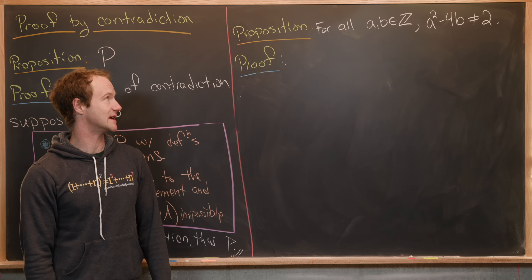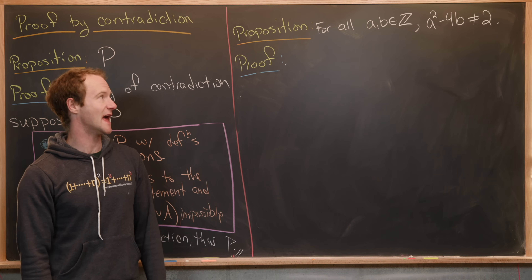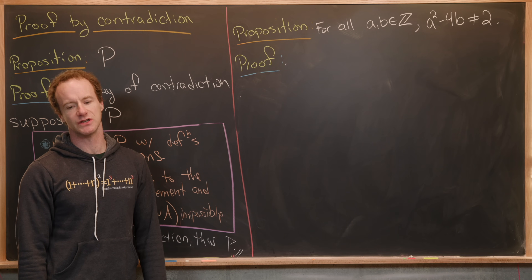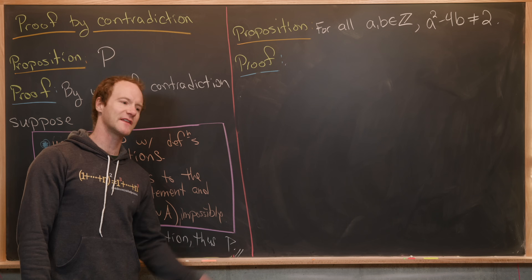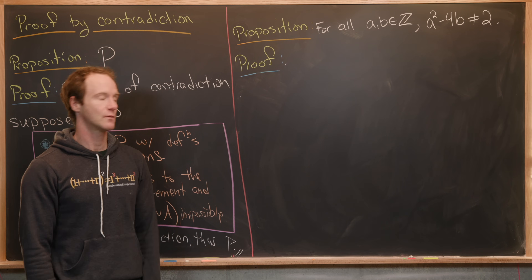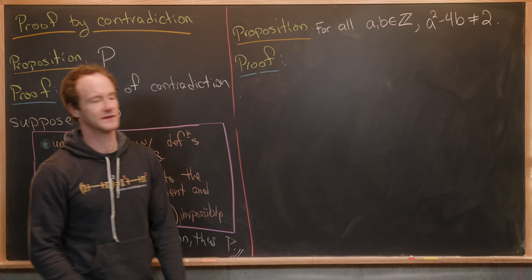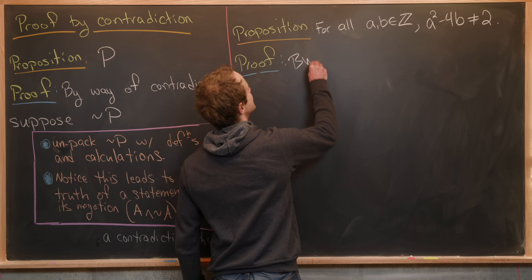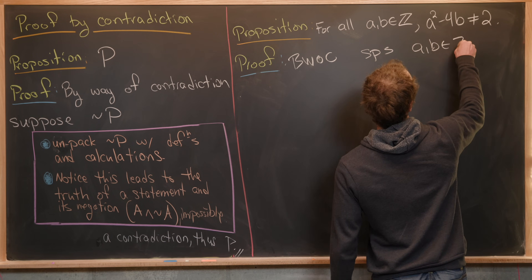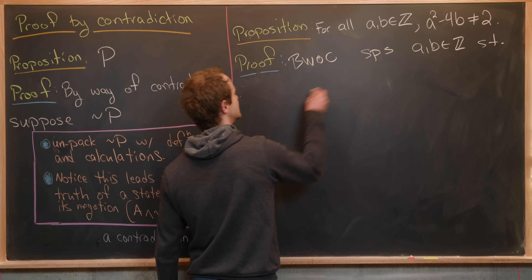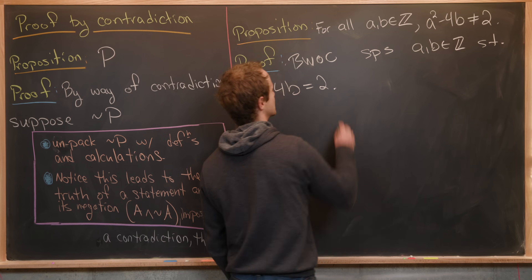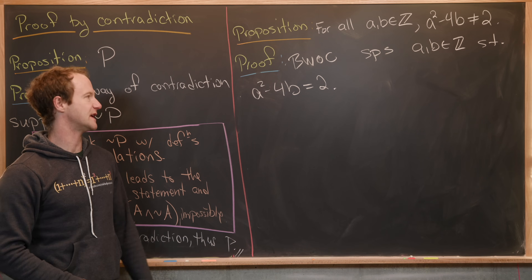Now let's look at our last example. We want to show that for all integers a and b, a squared minus four b is not equal to two. By way of contradiction, suppose that a and b are integers such that a squared minus four b equals two.